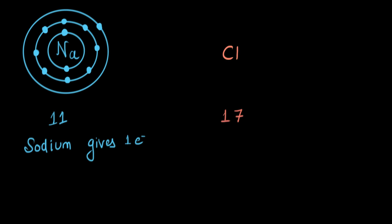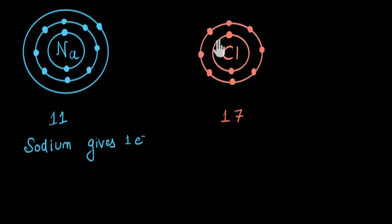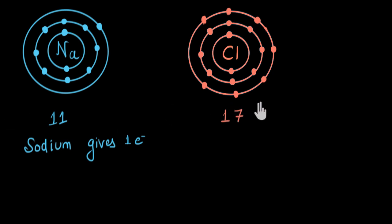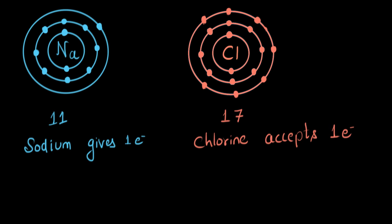Now let's look at chlorine. Chlorine's atomic number is 17, meaning it has 17 protons and 17 electrons. In the first shell, a maximum of two electrons; in the second, a maximum of eight — so 2 plus 8 equals 10 electrons. 17 minus 10 means seven electrons are remaining, which occupy the outermost shell. So chlorine's octet is not complete because the valence shell has only seven electrons — we need one more. So chlorine will accept one electron. Sodium and chlorine seem to be made for each other: sodium wants to get rid of one electron, while chlorine wants to accept one — and that's exactly how they react.